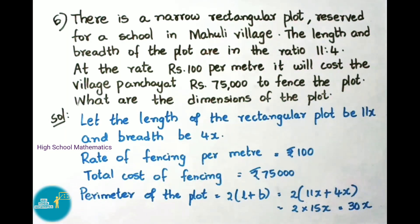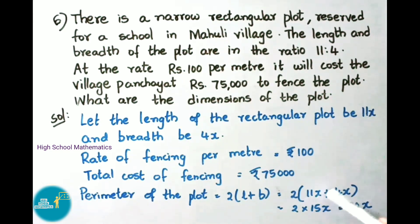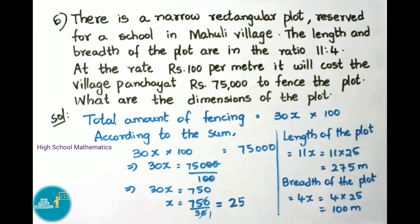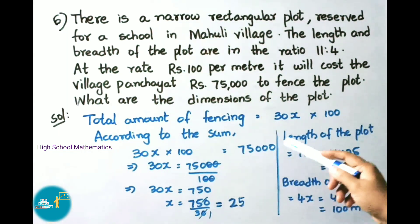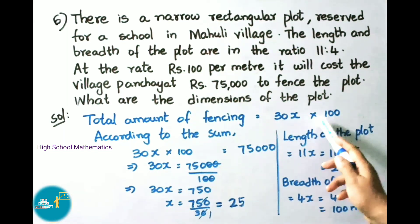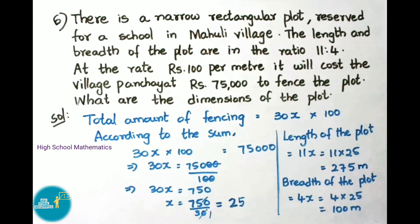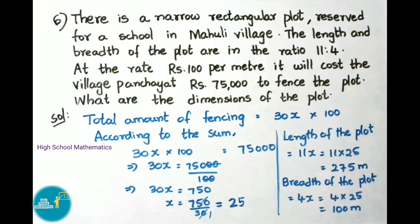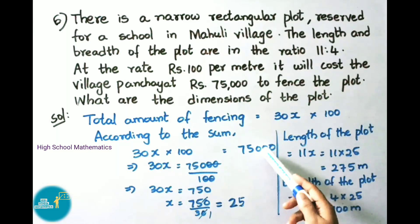The perimeter of the plot is 2 × (length + breadth) = 2 × (11x + 4x) = 2 × 15x = 30x. Total cost of fencing = perimeter × rate per meter = 30x × 100. According to the problem this equals 75,000 rupees, so 30x × 100 = 75,000.